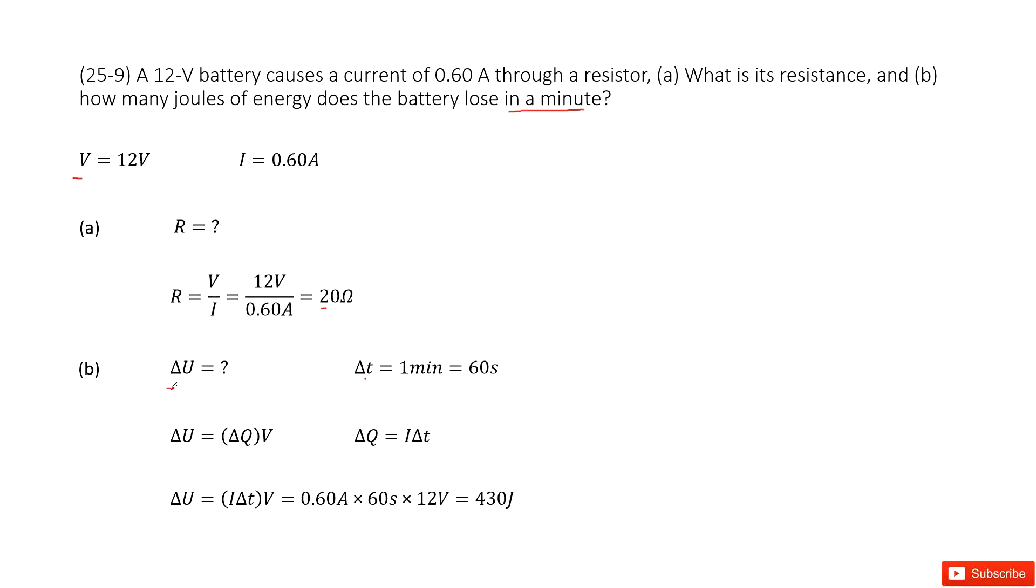Now we can see the electric energy can be written as the change of the charge times V. That is Q times V, the definition. And then how do you find the charge changes? Use the current times t. Do you agree? Yes.